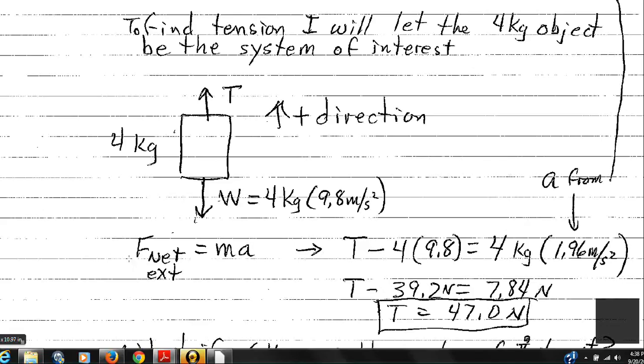So as we write F equals MA, tension is in the positive direction. The four times 9.8, that weight is a negative. So as we add in that force, we get a negative sign. The mass now for our system is only four kilograms. We're focusing our tension on just the four kilogram object.